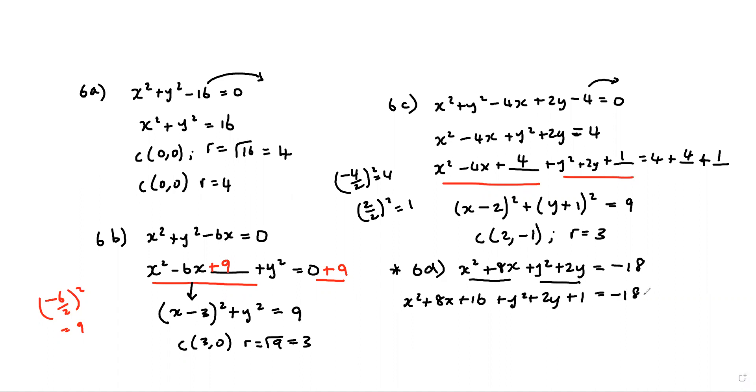So minus 18 plus 16 plus 1 which is 17. Interesting. So now we can actually stop because on this side you're going to get negative 1. We don't have a positive number here, so this is not a graph of a circle.